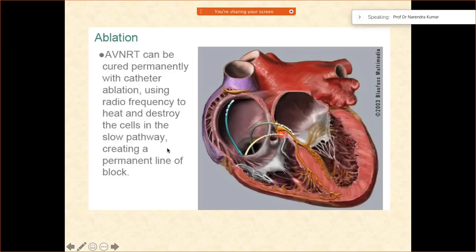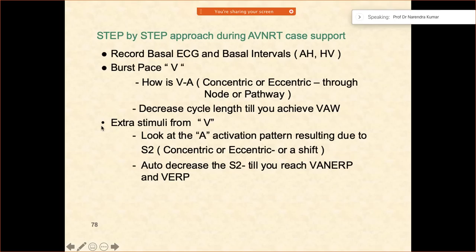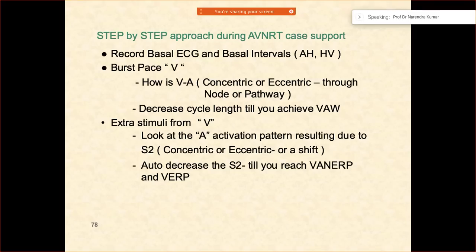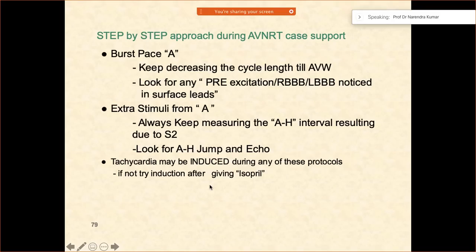That is why you try to go and ablate in the slow pathway. This is a step-by-step approach: take the baseline intervals, do the burst V pacing, look at how the V interval is going — concentric, eccentric — going through the node or through the pathway. Decrease the cycle until you achieve a Wenckebach. Similarly, use extra stimuli from the V and keep looking at the A activation pattern resulting from S2, then auto-decrease S2 till you reach the VA nodal effective refractory period.